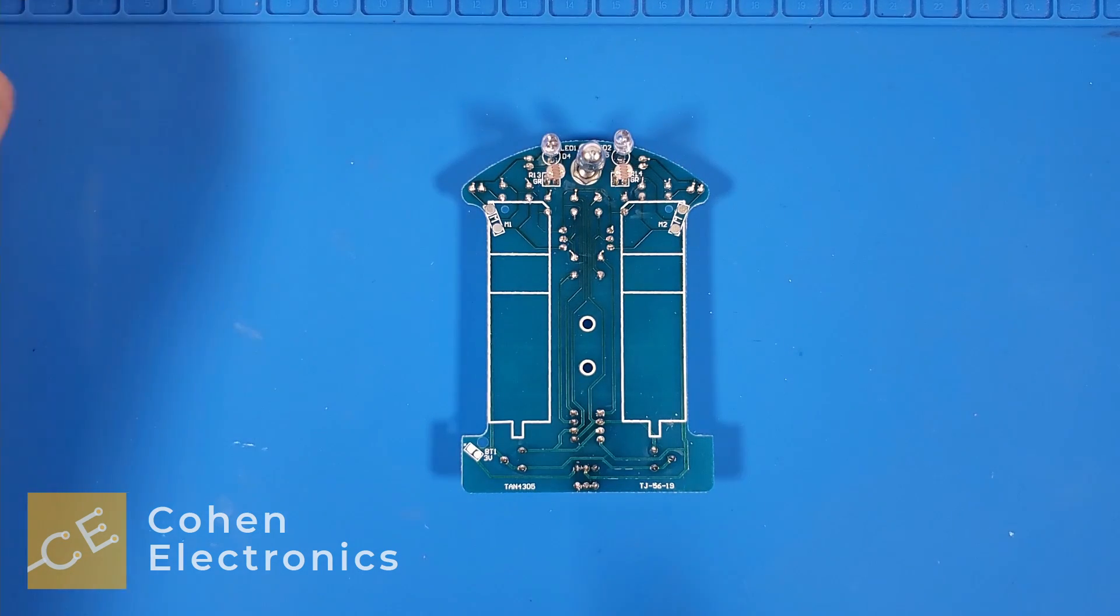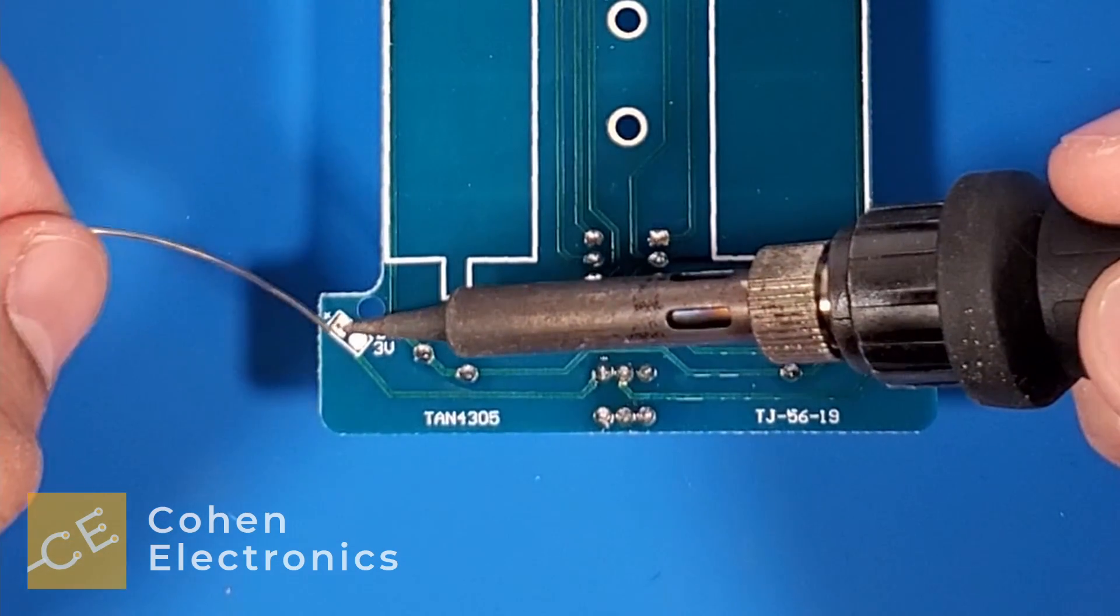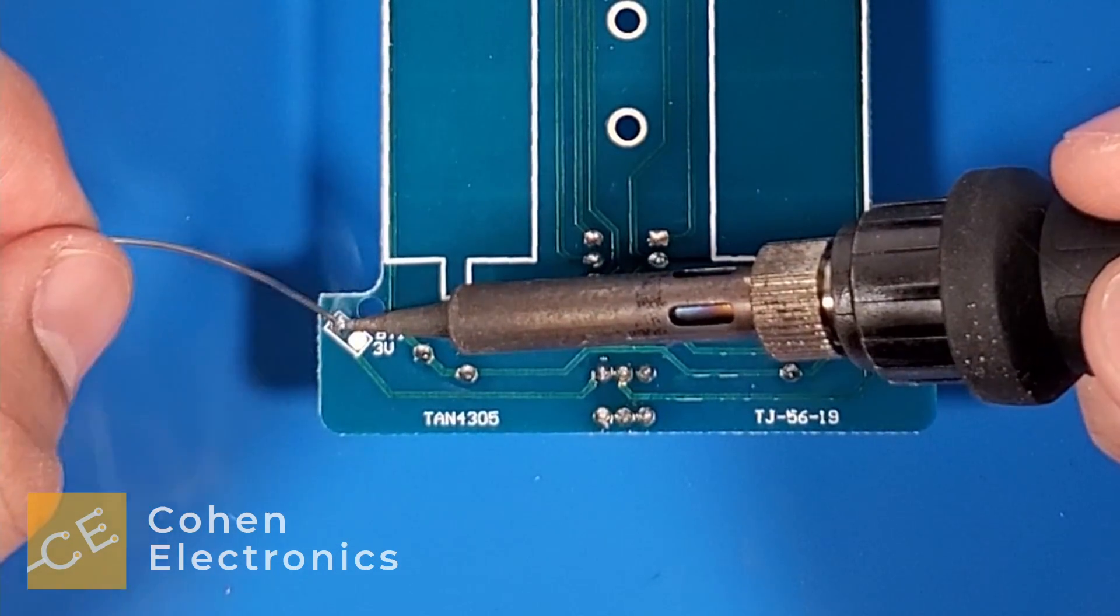Now, we are going to add the battery holder, but before we do, let's apply a bit of solder to the battery pads like so.